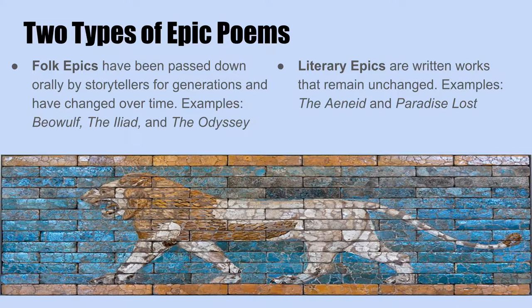Literary epics are written works that remain unchanged. Examples include The Aeneid and Paradise Lost.